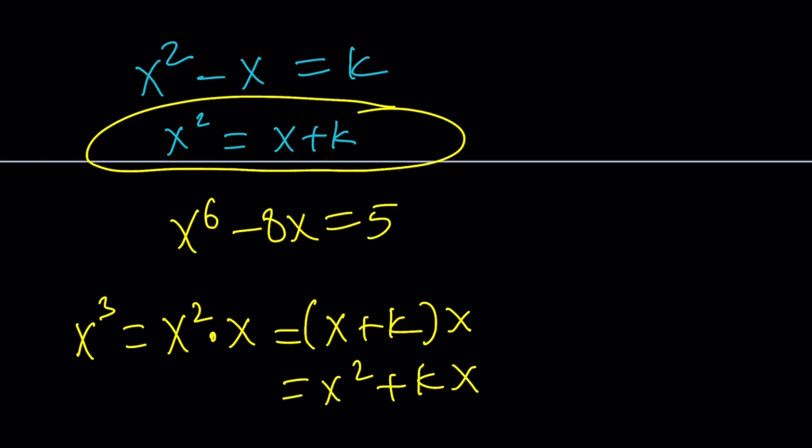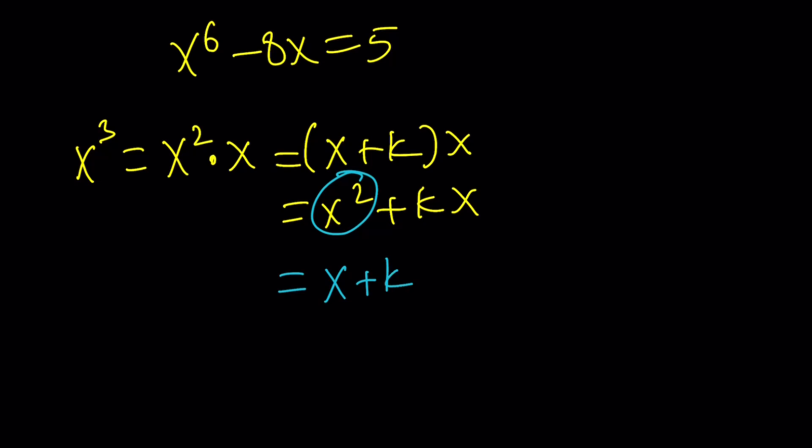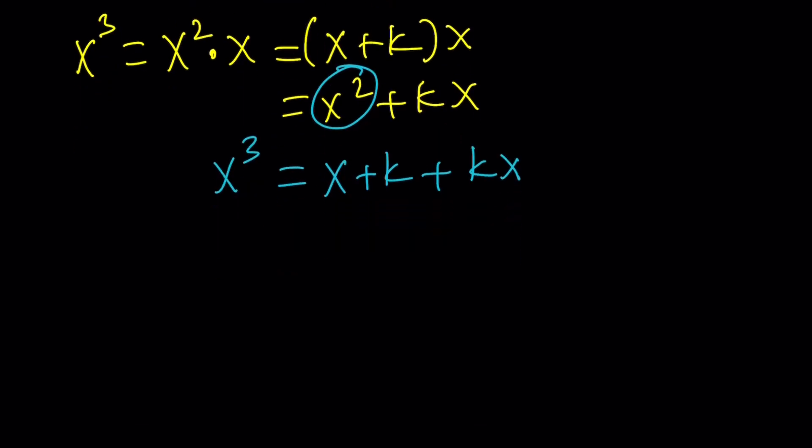But remember, x^2 is always the same thing as x + k. Let's replace it with x + k so we can linearize every power. This gives us (k + 1)x + k. This is x^3, but I need x^6, so let's square both sides.